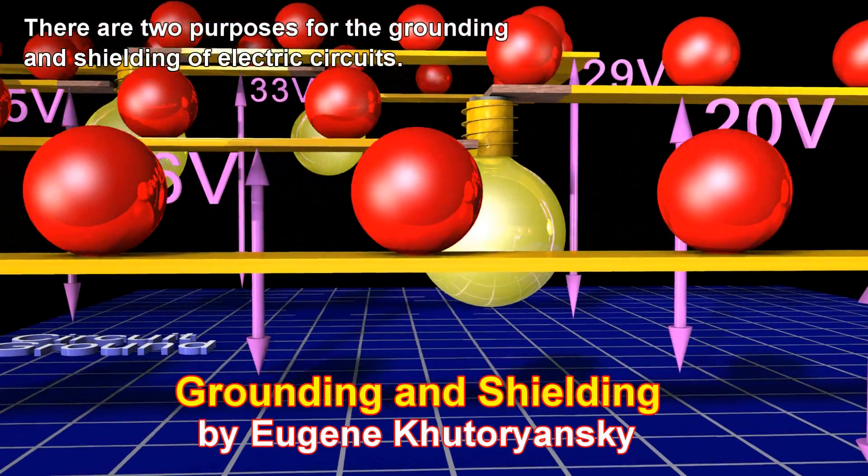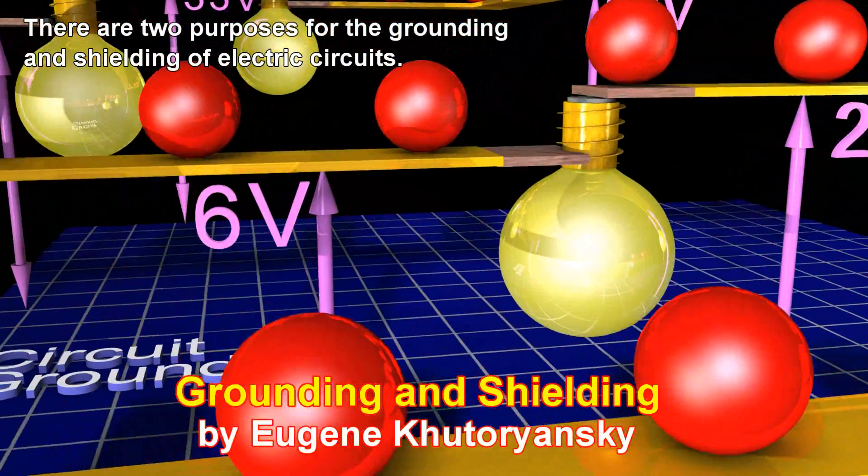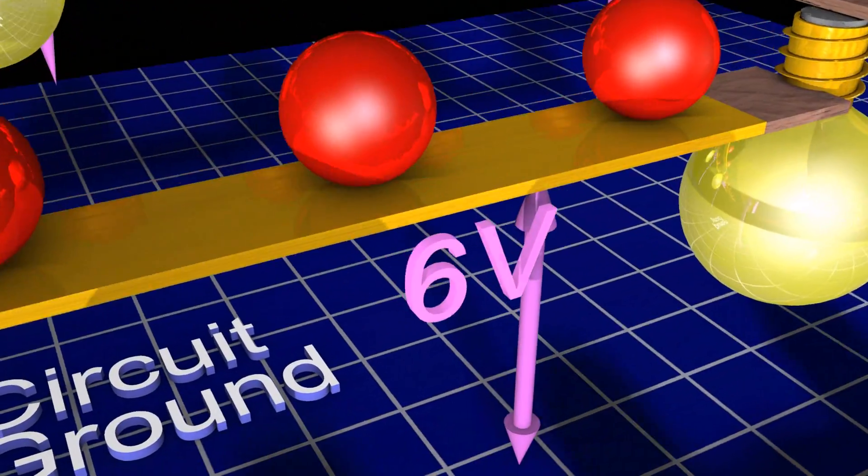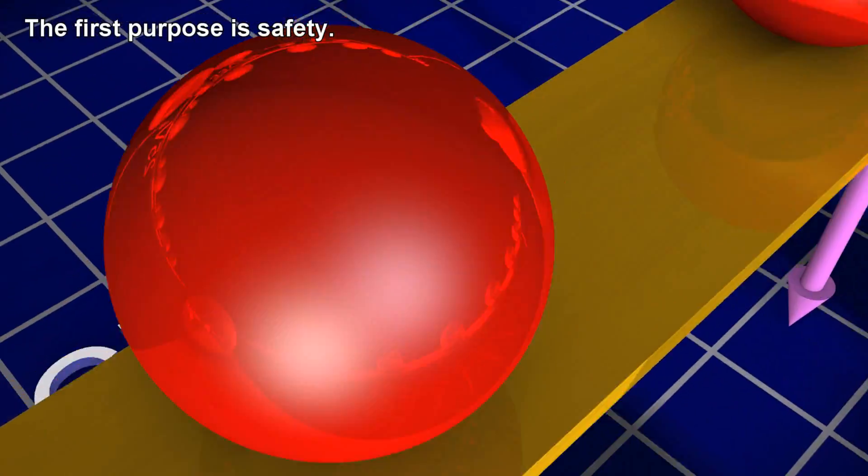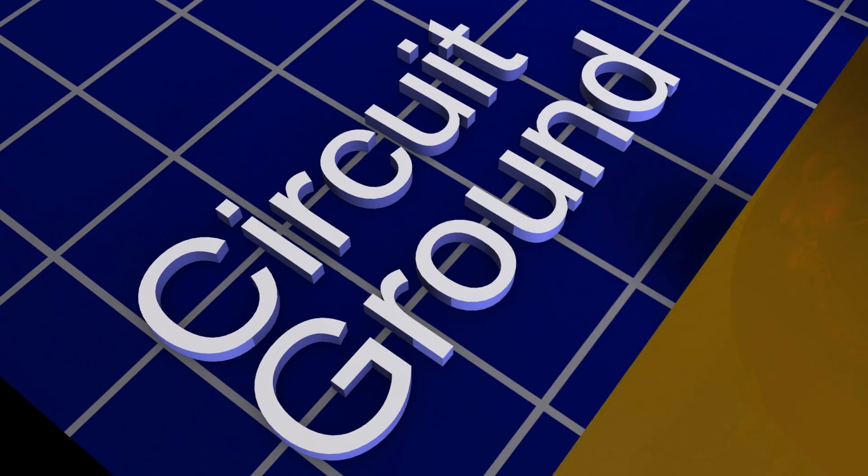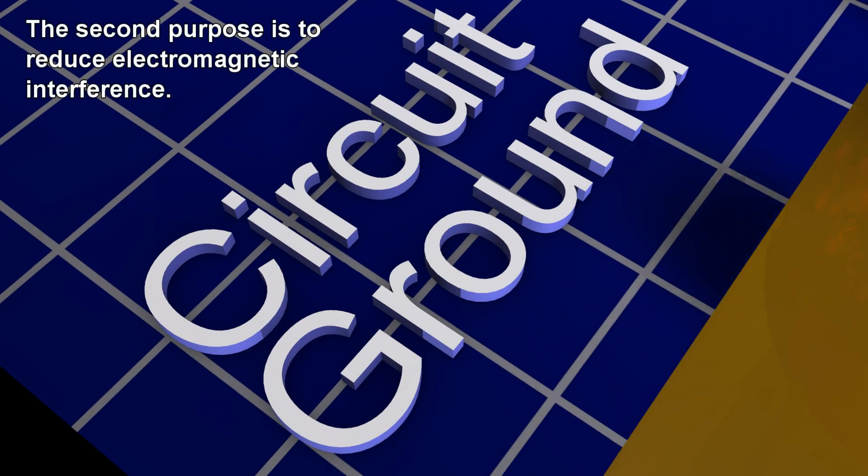There are two purposes for the grounding and shielding of electric circuits. The first purpose is safety. The second purpose is to reduce electromagnetic interference.